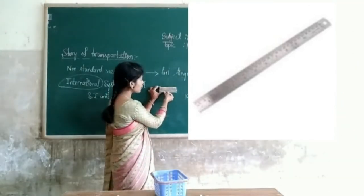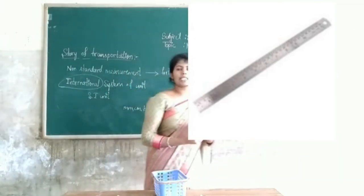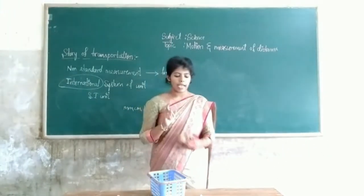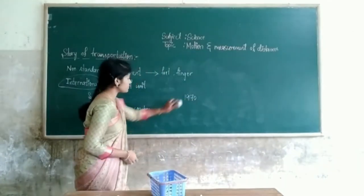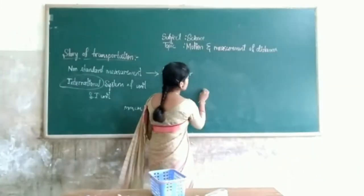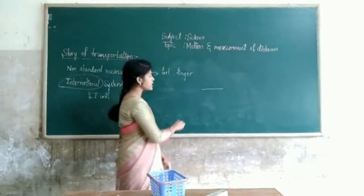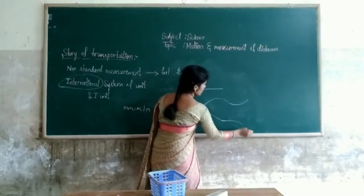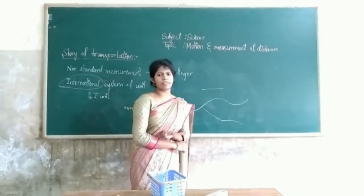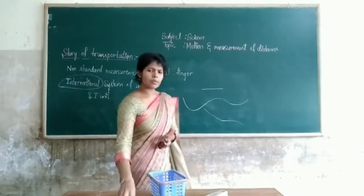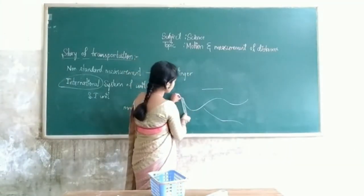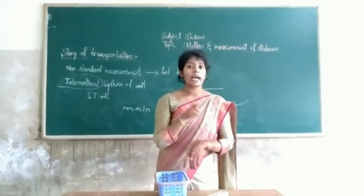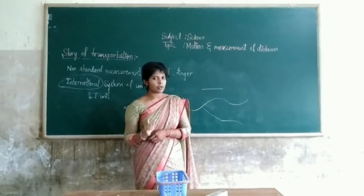If I want to measure the length, and if the object is straight, then we can easily measure it. But if the object is not straight — if it is circular or curved — how can we measure? It is quite difficult to use a scale on a curve. That time, we use a thread to measure the curved length.